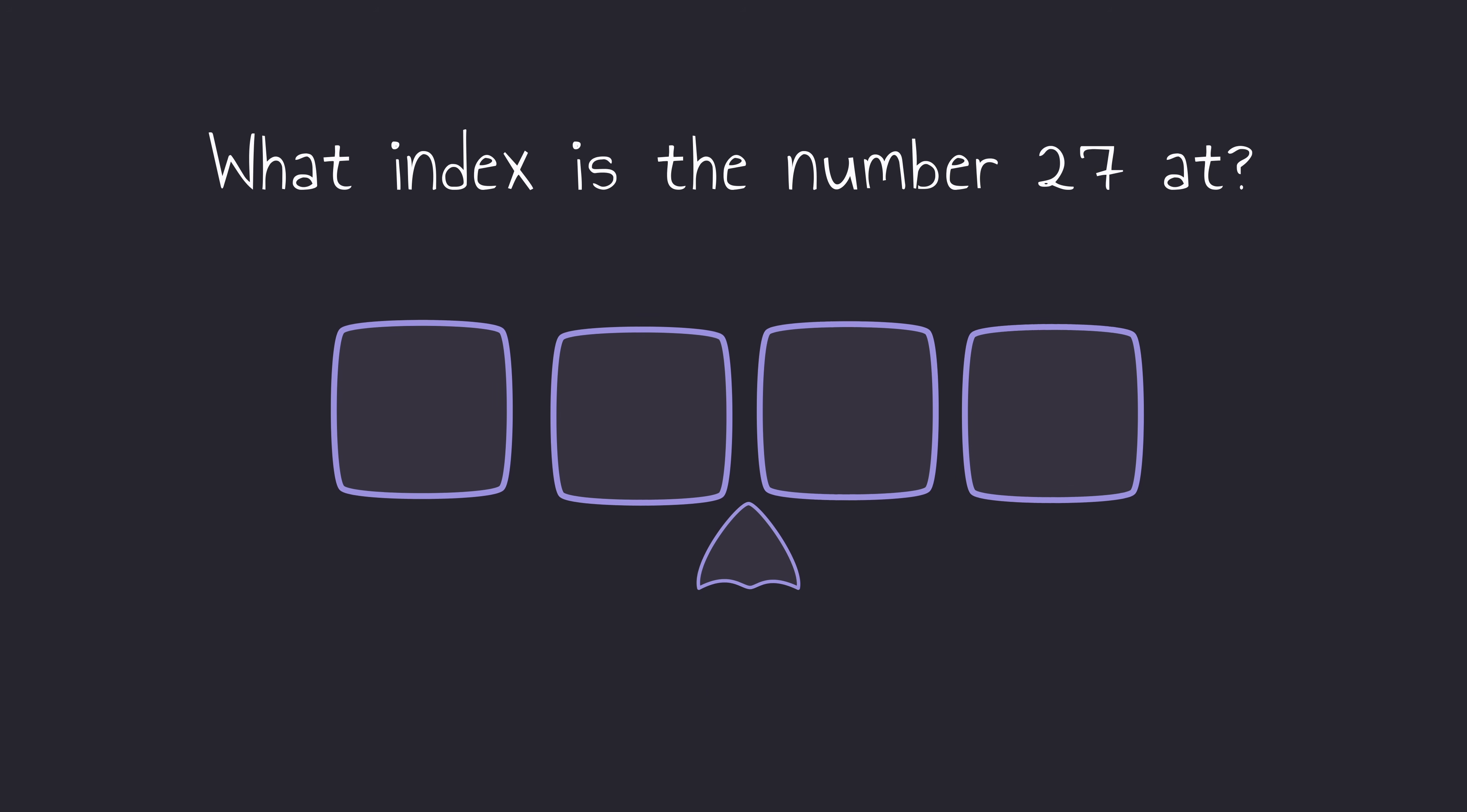Ah, turns out our middle is in between two indexes. Well, that's okay. Let's take a look at the element on the left-hand side of the middle instead. The value at this index is 30, which means that 27 can only be to the left.